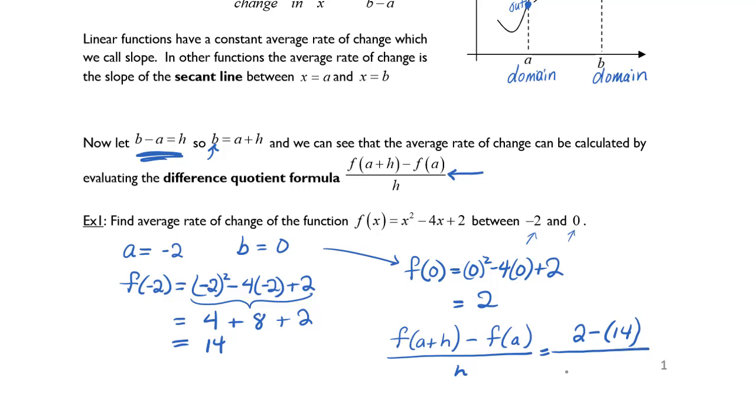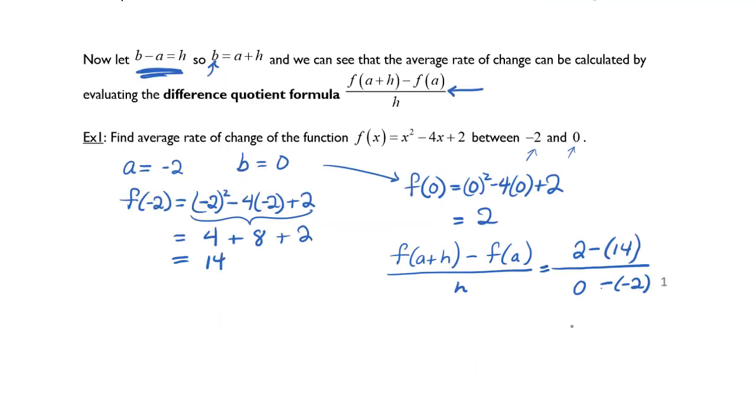Well what do we know h is equal to? h is b minus a. b was 0 and a was negative 2. This will give me negative 12 over 2, which is equal to negative 6.